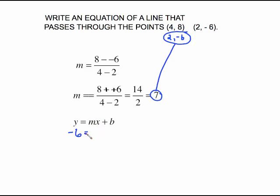So again, y is negative 6, m is 7, x is 2, plus b. So, this is negative 6 equals 14 plus b. Subtract 14 from both sides is going to give us negative 20 for b. So, the equation is y equals the slope we found in the beginning, minus 20. If you want to check, then put the other point in there. Put 4 here, put 8 here, and you'll see that it checks.